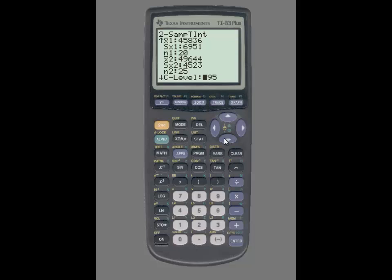So, simply scroll down, select the level of confidence which was 99%. Again, pooled set to NO, highlight CALCULATE and press enter and you will see the values for the confidence interval.